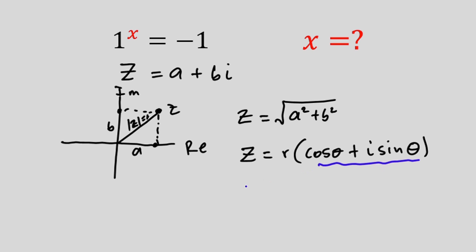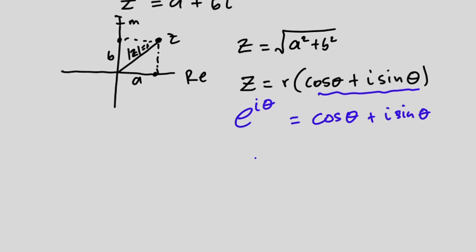This is the same as Euler's equation which is given by e to the power i theta is equal to cos theta plus i sine theta and this implies that we're going to get z to be equal to r e to the power i theta.